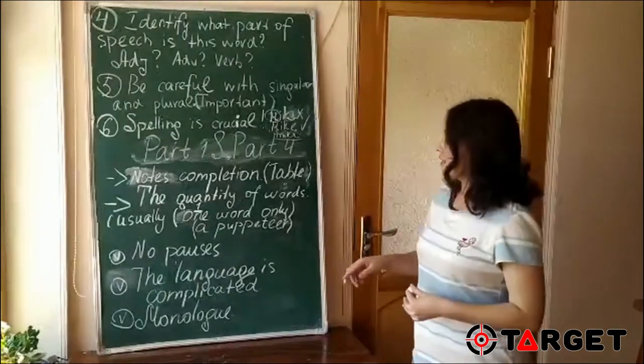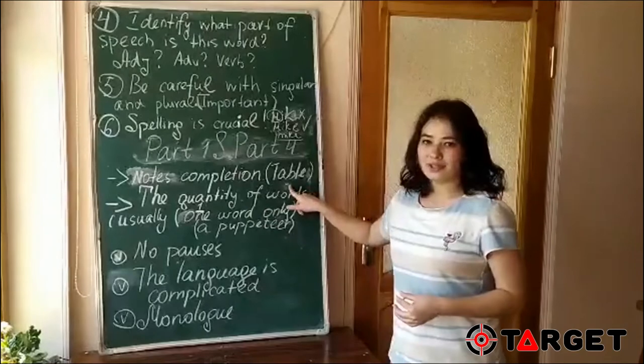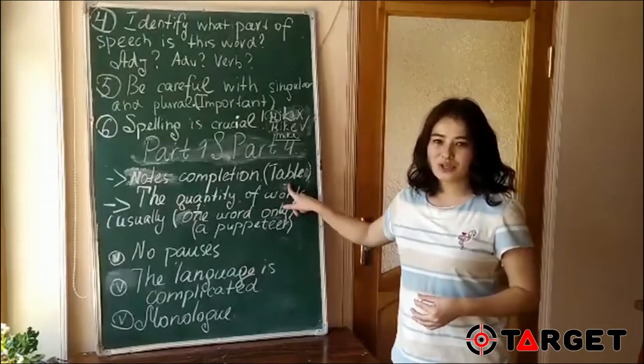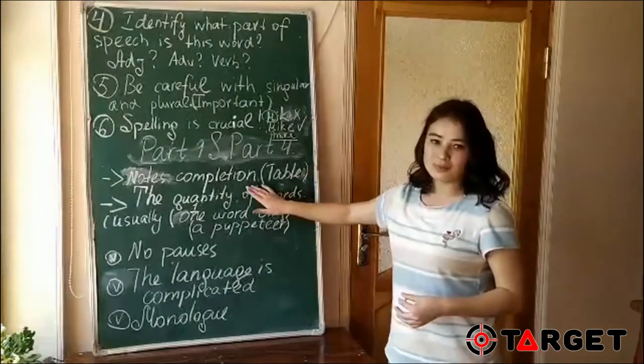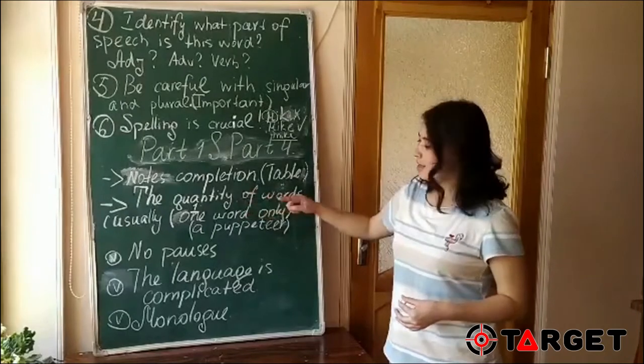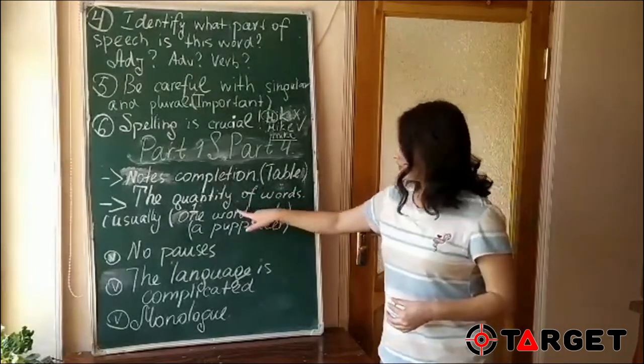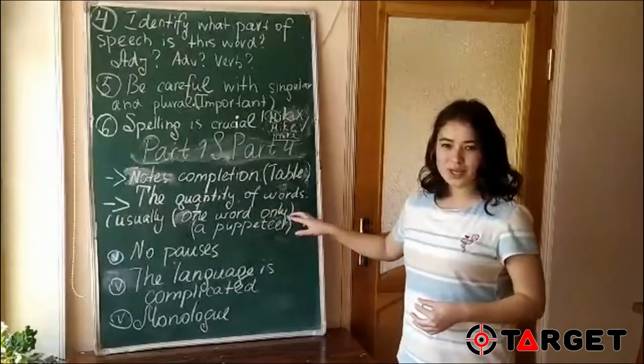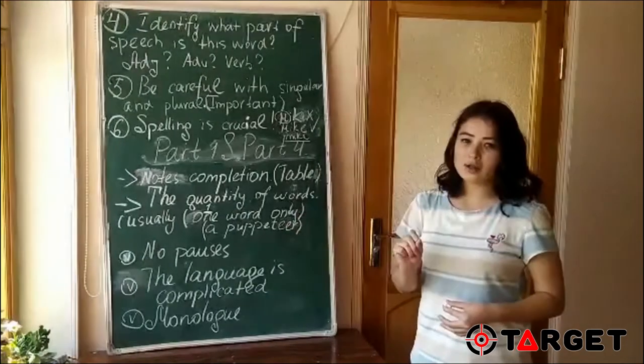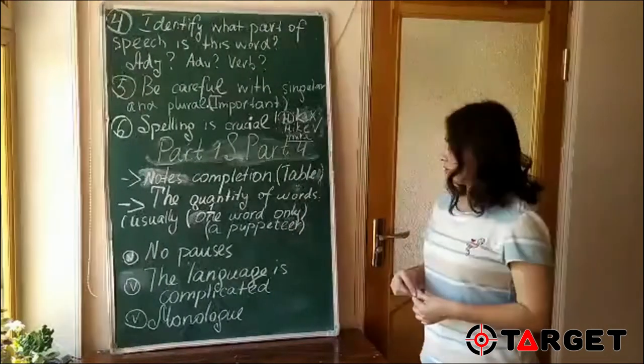First similarity is note completion or table completion, because these parts usually have the same type of question. Second similarity is the quantity of words, because usually in both of these parts, we do have only one word to complete.